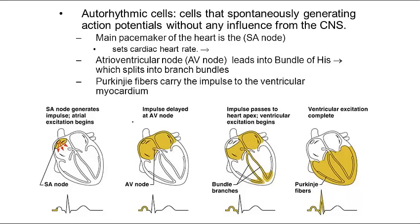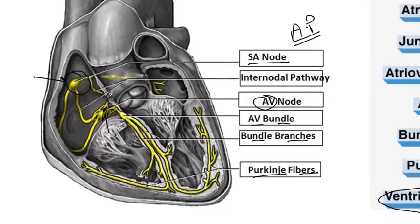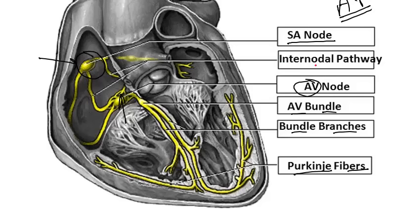The SA node is located in the right atrium. It initiates the depolarization impulse, which in turn generates an action potential that spreads throughout the atria to the AV node — that is the first process. Then it comes to the internodal pathway, the second component.